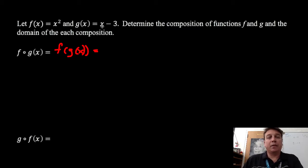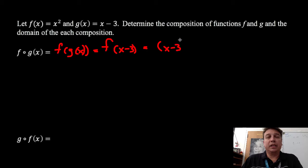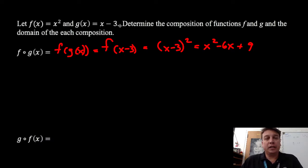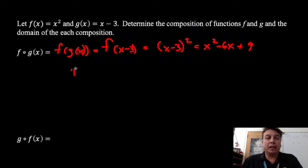That means I'm going to take function g and substitute it into function f. So I have f of x minus 3, which is then x minus 3 squared, giving me x squared minus 6x plus 9. Now let's take a look at the values and if we have any restrictions. The domain of g is all real numbers, and the domain of f is all real numbers, so there's no value of x that won't be allowed. Our domain is the set of all real numbers, negative infinity to positive infinity.